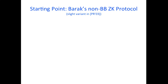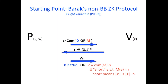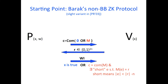Our starting point is Brak's non-black-box zero-knowledge protocol. The prover sends a commitment of either zero or some machine M to the verifier. The verifier responds with a very long random challenge — much longer than the commitment itself. Finally, the prover proves using a witness-indistinguishable proof that either the statement is true, or he has committed to a program in the first message for which there is a very short input that makes it output the challenge R — short meaning shorter than the random challenge by the security parameter.